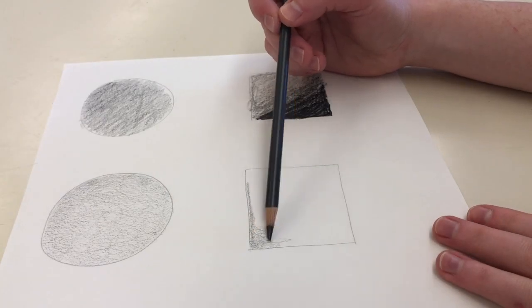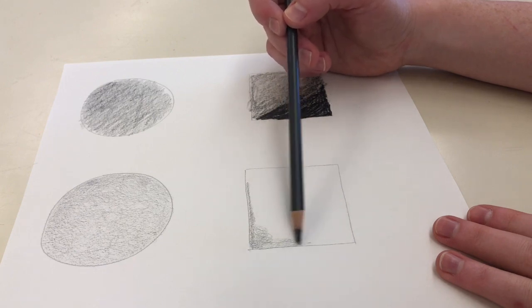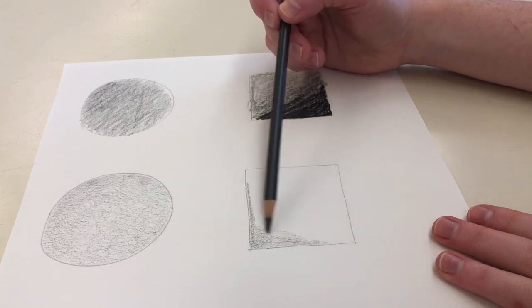In the other box I'm showing you how to use the circle technique in order to create a smooth transition.